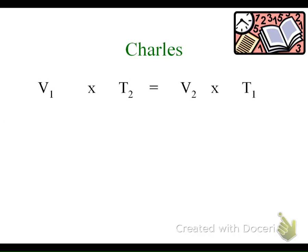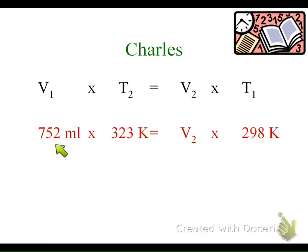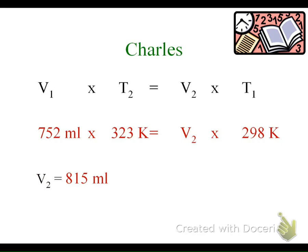Plugging in our variables: we've got 752 mL, T2 is 323 Kelvin — that's another reason I write it out so I don't put temperatures in the wrong spot — and T1 is 298 Kelvin. Simply solve for V2. My volume did go up because my temperature went up. I'm checking my relationship just like we talked about with Boyle's Law, and I know mathematically I have done that correctly.